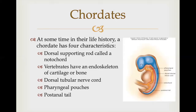In this image of an embryo, you can clearly see all four chordate features. Many of these features are lost or heavily modified once the embryo fully develops. Here are the pharyngeal slits, the dorsal tubular nerve cord, the notochord shown as the red band, and the post-anal tail.